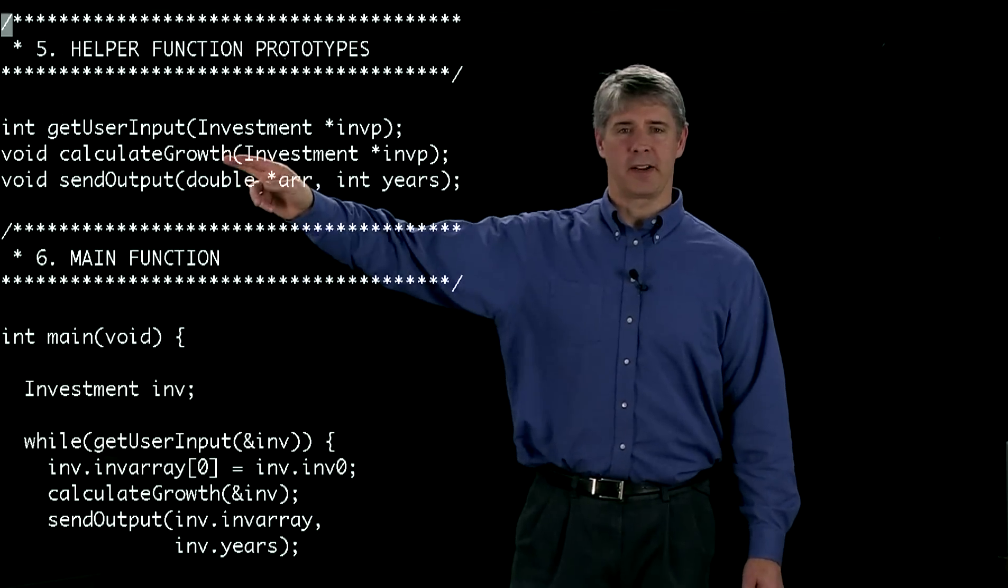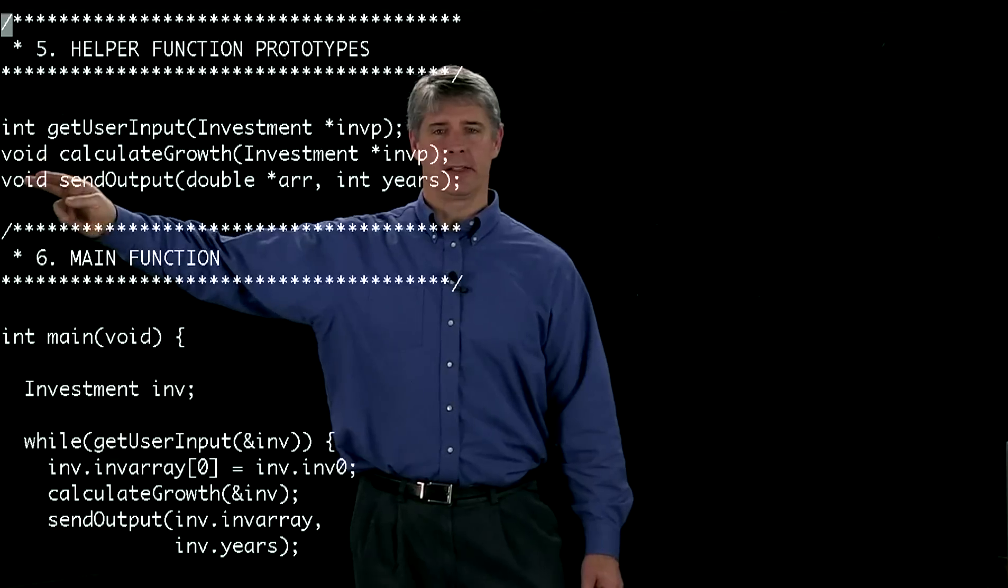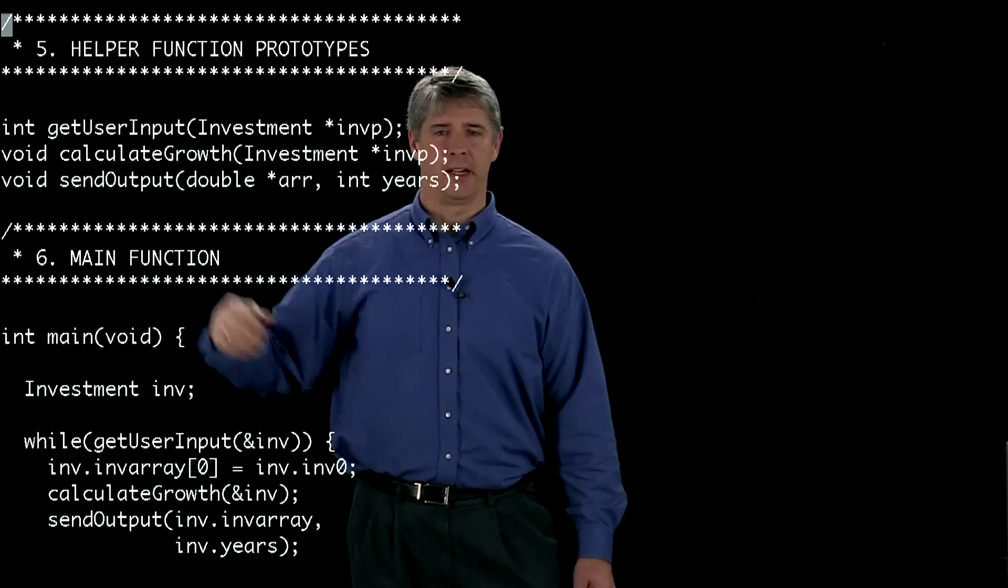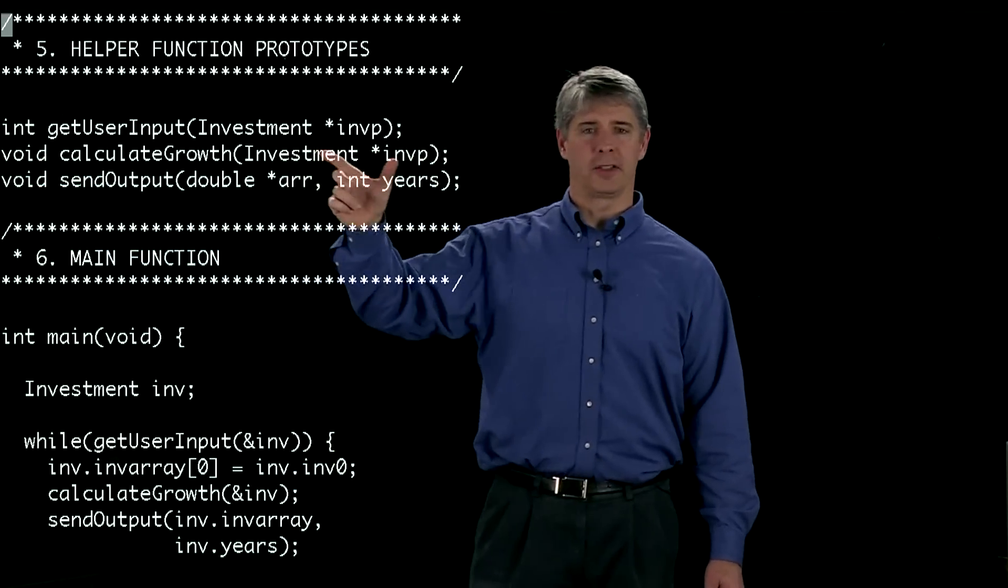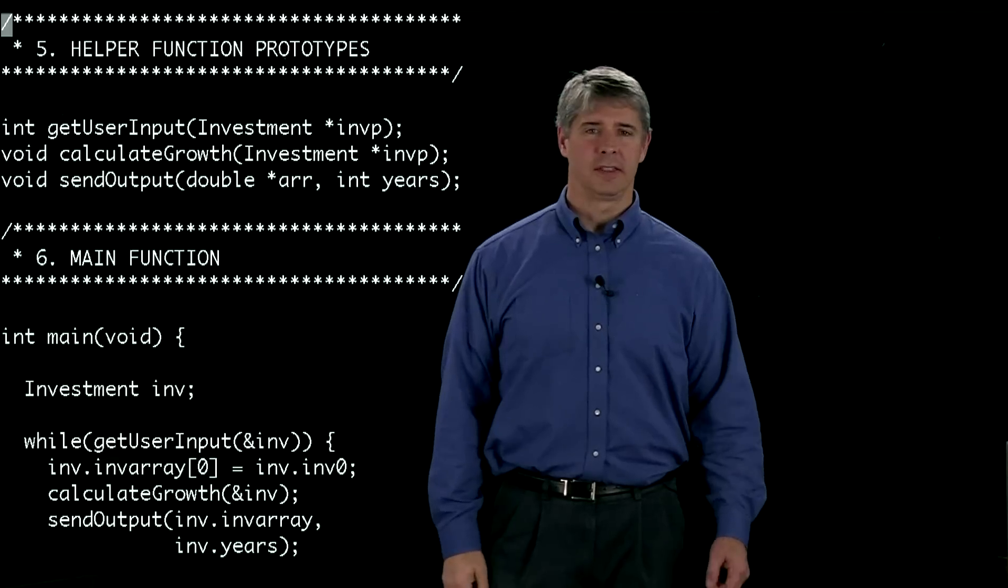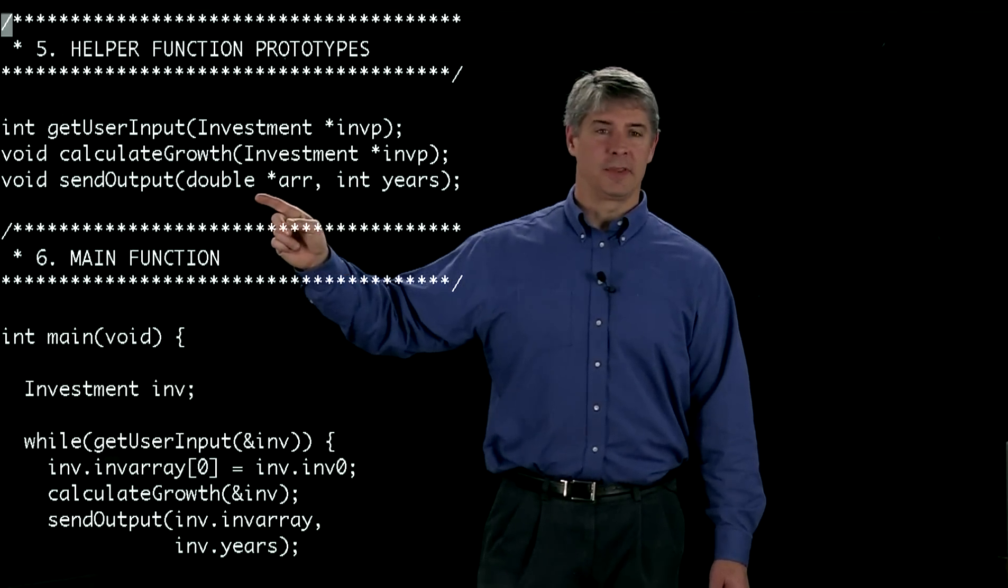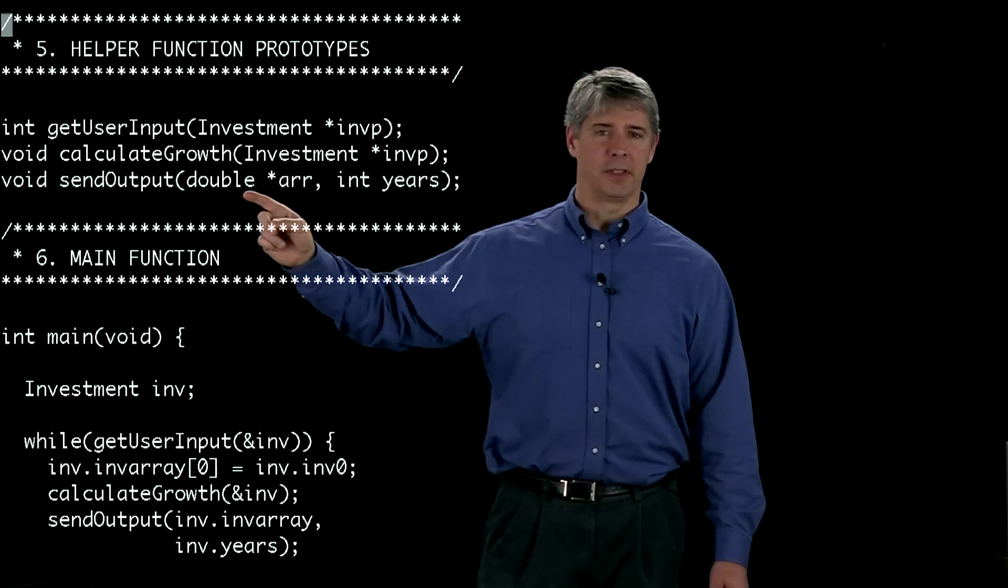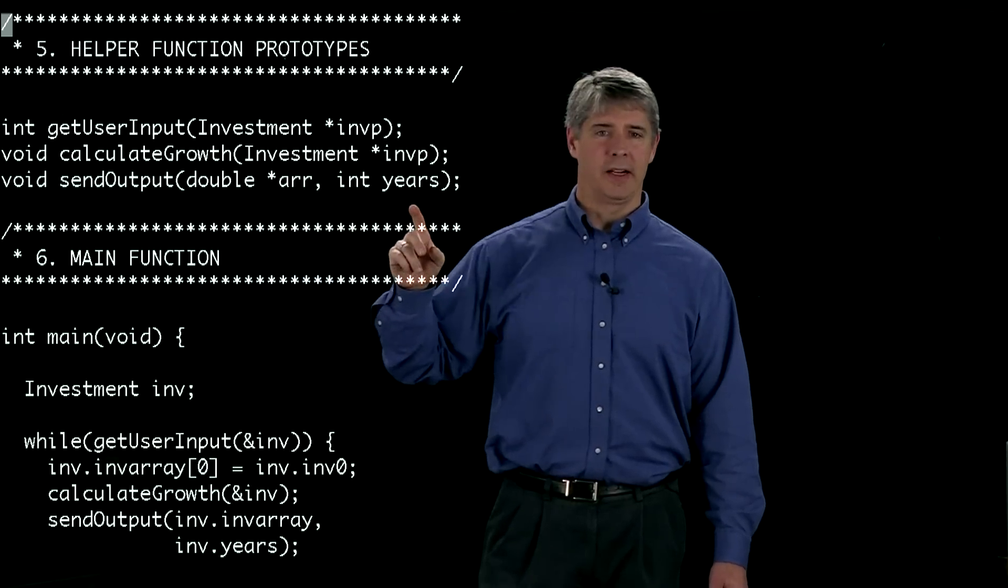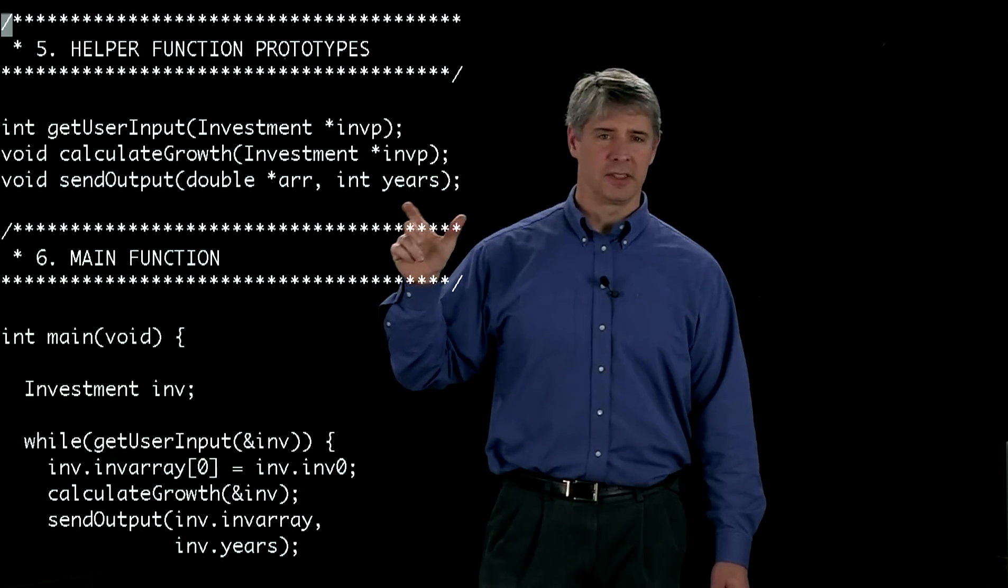The next function calculateGrowth doesn't return anything, neither does sendOutput return anything. CalculateGrowth also takes a pointer to type investment. And sendOutput takes a pointer to type double. So arr is a pointer to type double, and it also takes an integer years.